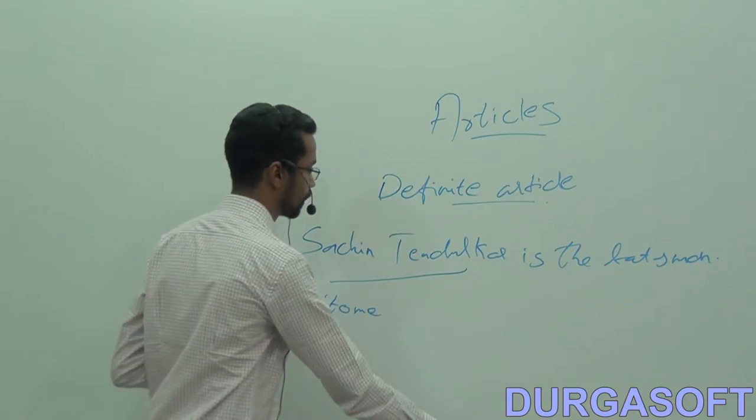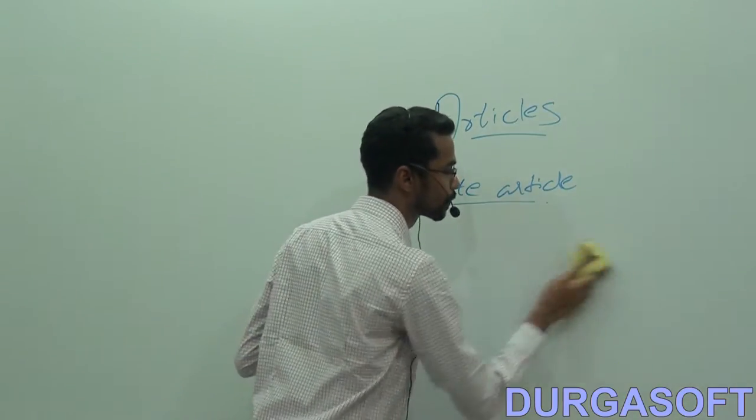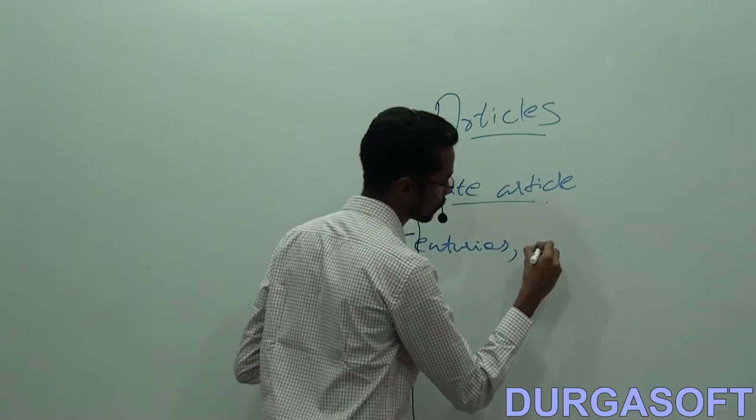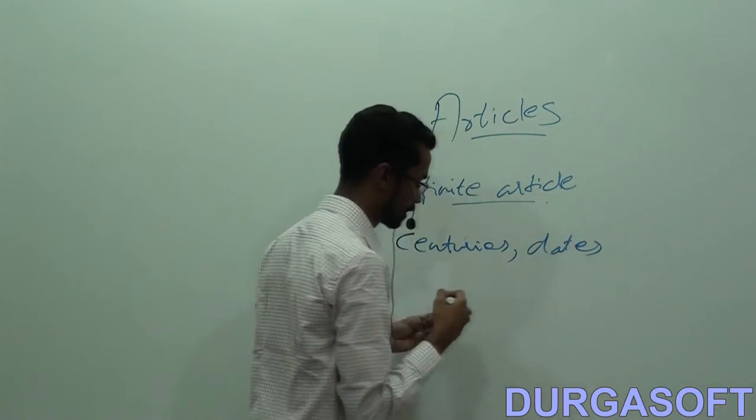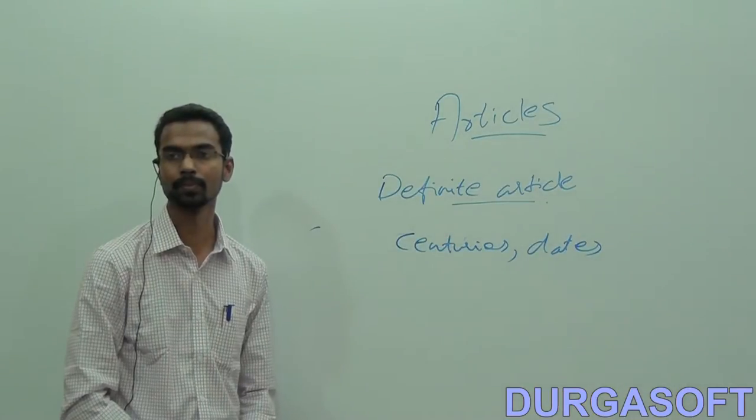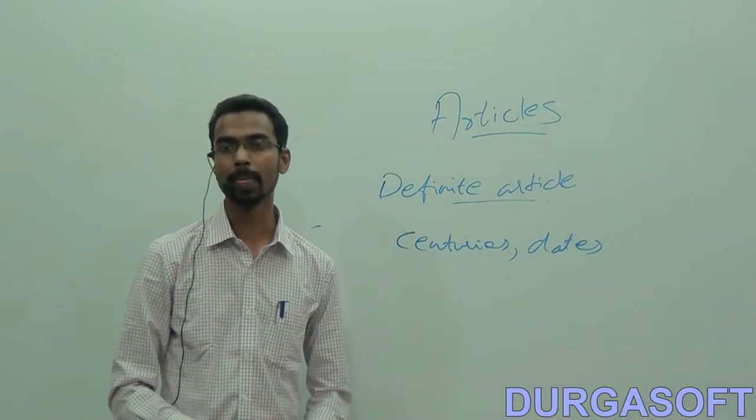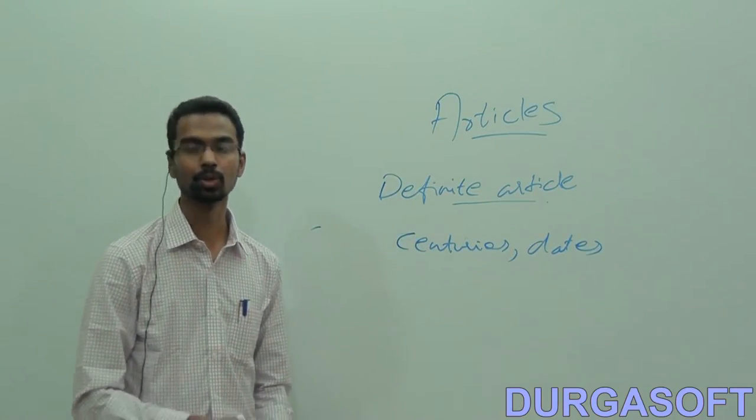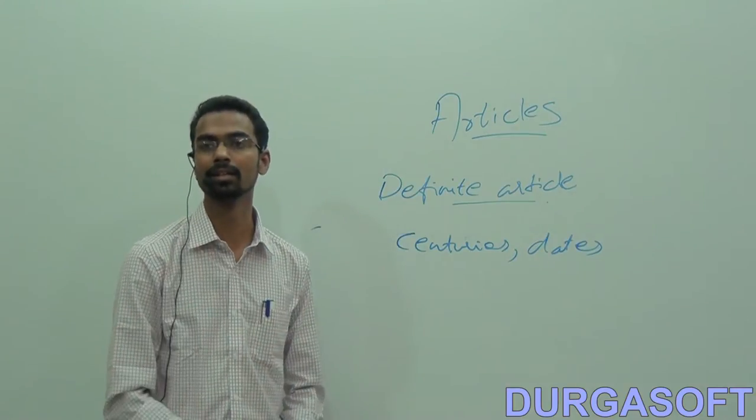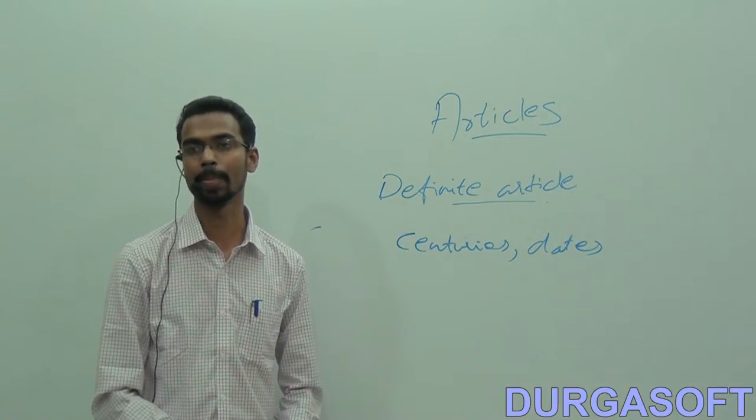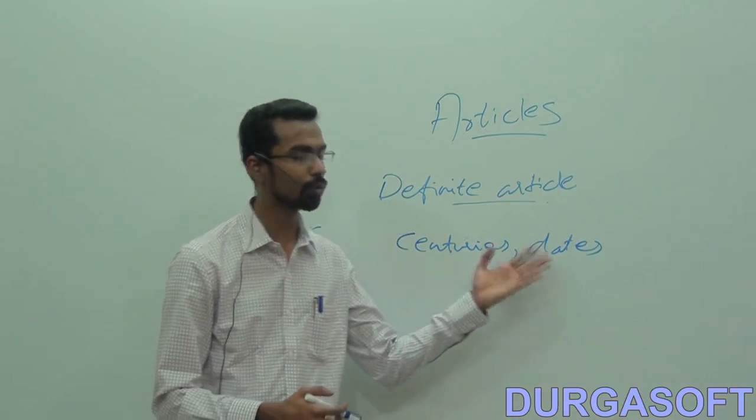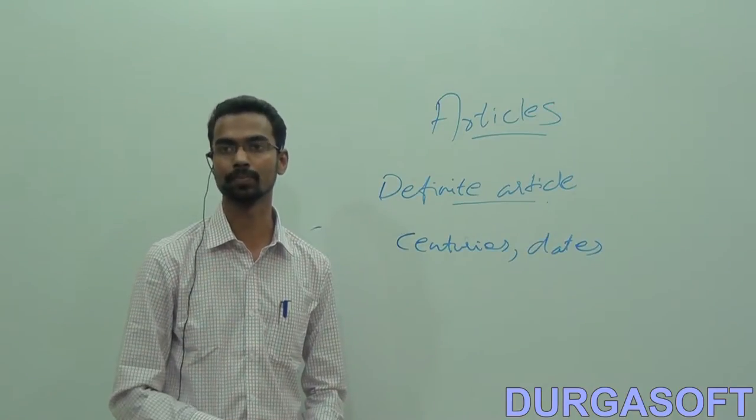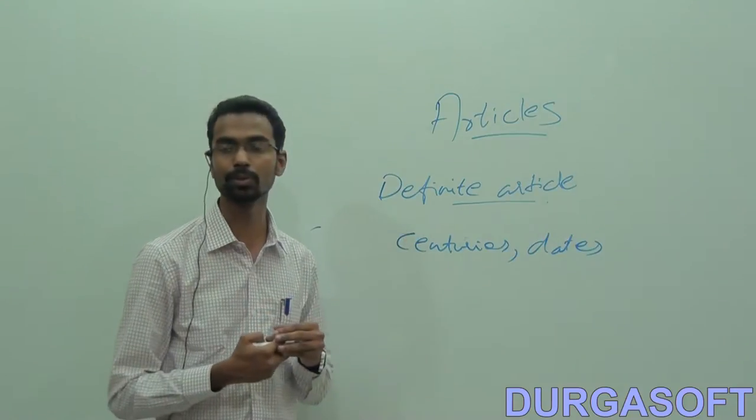Finally we also use the definite article before centuries, dates, etc. India in which century? In the 20th century. So before the names of centuries also we add the 19th century, the 17th century, etc. And similarly for dates also: the 24th of March or the 1st of August. So there also we use the definite article.